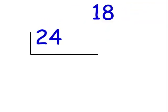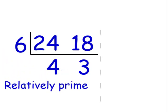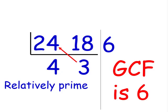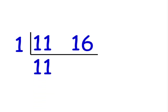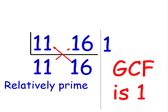24 and 18: what number divides both evenly? The greatest common factor is 6. 24 divided by 6 is 4, and 18 divided by 6 is 3. 4 and 3 are relatively prime. Therefore our GCF is 6. 3 times 24 or 4 times 18 gives us 72, and 72 is the LCM. One last example: 11 and 16. The only number that divides both evenly is 1. 11 divided by 1 is 11, and 16 divided by 1 is 16. 11 and 16 are relatively prime. Our GCF is 1. Our LCM is 11 times 16, which is 176. 176 is the LCM.